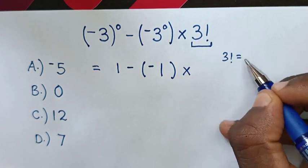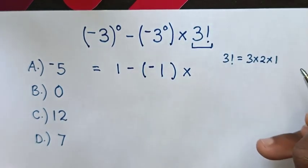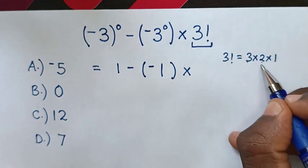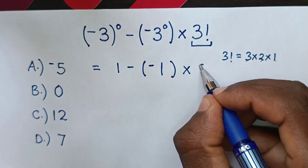3 factorial is the same as 3 times 2 times 1. So, 3 times 2 is 6, 6 times 1 is 6, therefore, 3 factorial is 6.